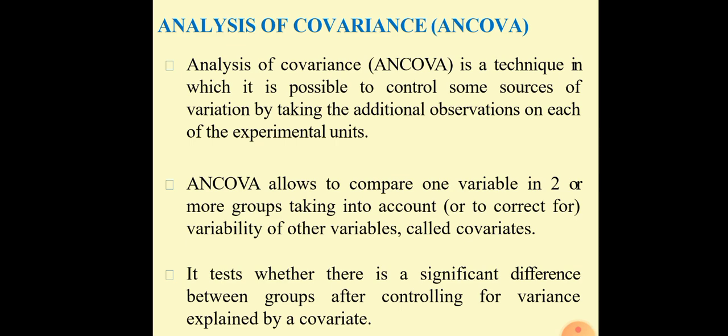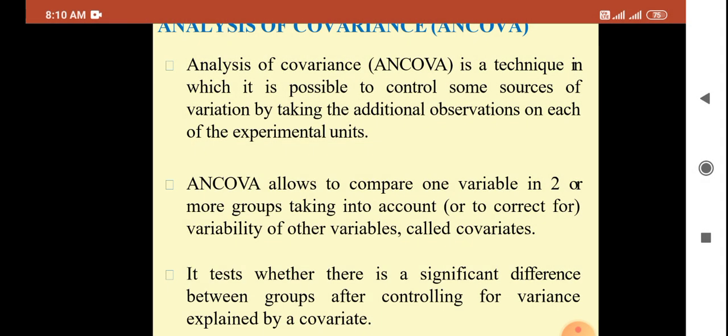It tests whether there is a significant difference between groups after controlling for variance explained by a covariate. After controlling, we determine if the difference between groups is significant or not. This kind of analysis can be done with the help of covariance.